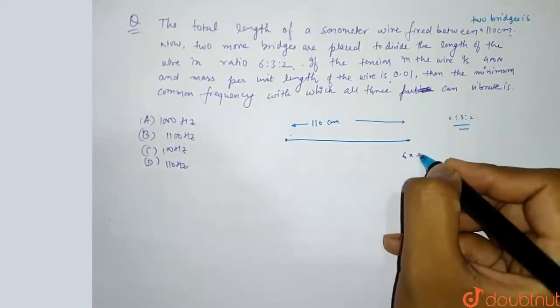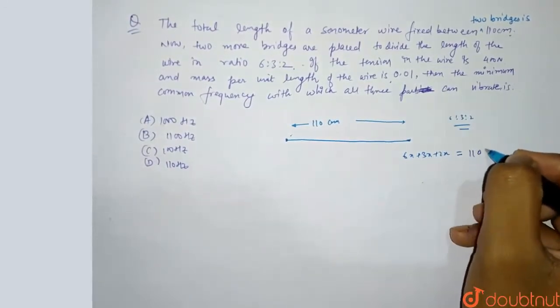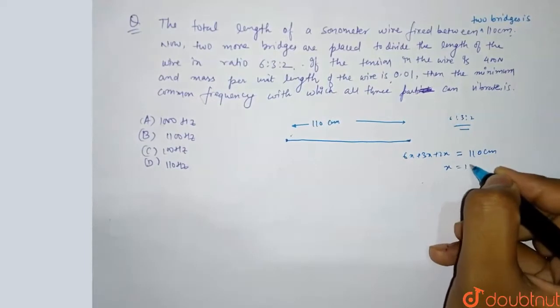Now when we make nodes, we will see 6x plus 3x plus 2x, because it will be in this ratio. And it is equal to 110 cm. So x will be 10 cm.